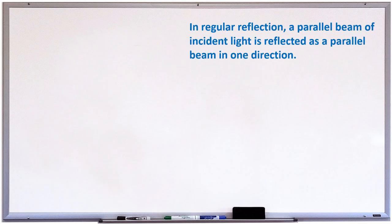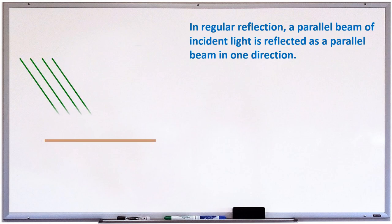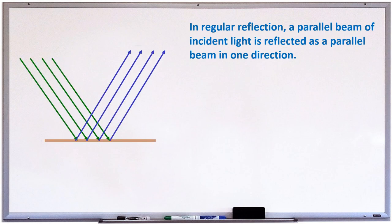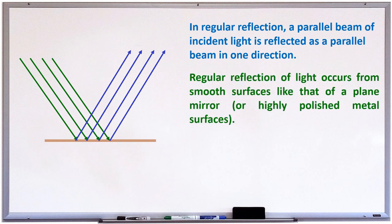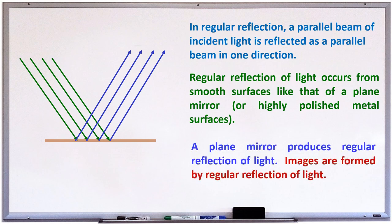Children, there are two types of reflection. One is regular reflection and another one is irregular reflection. In regular reflection, a parallel beam of incident rays is reflected as a parallel beam in one direction. All incident rays are parallel and reflected rays are also parallel. Regular reflection of light occurs from smooth surfaces like that of a plane mirror or highly polished metal surfaces. A plane mirror produces regular reflection of light, and images are formed by regular reflection of light.